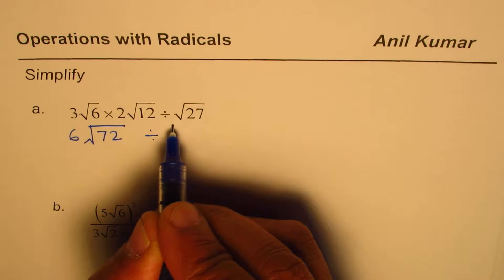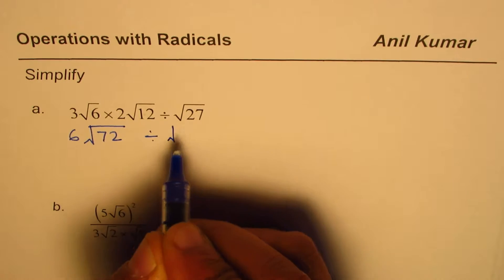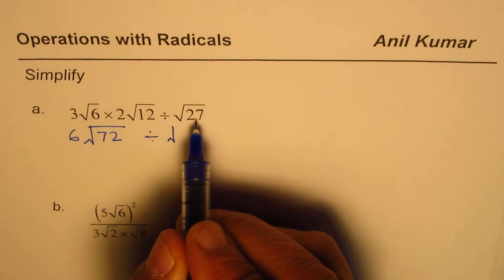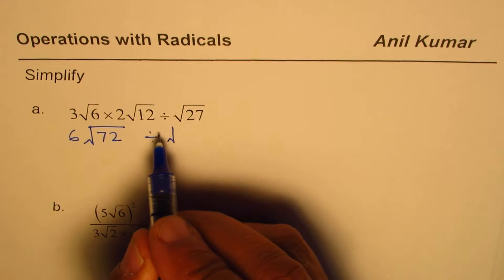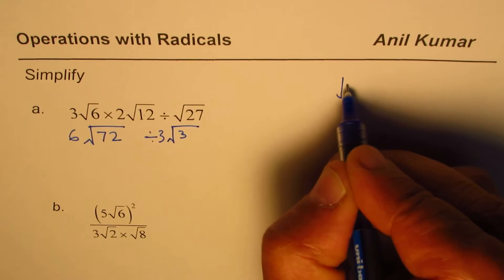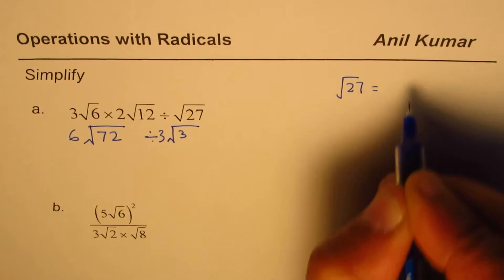At times we could also simplify and then do multiplication. √27 can be written as 3√3. Let me show you how: √27 equals √(9×3). Now 9 is a perfect square which is 3².